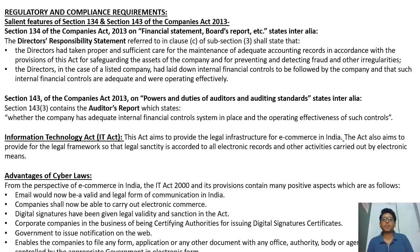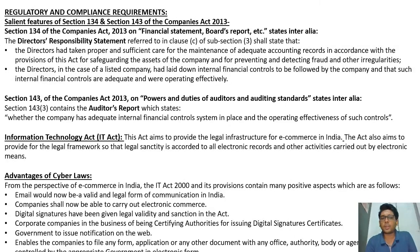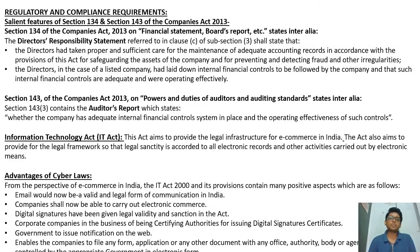Section 143 of the Companies Act covers the audit report, which states whether the company has adequate internal control systems in place and the operating efficiency and effectiveness of such controls. Further details on these sections will be covered in auditing, company law, and law subjects.